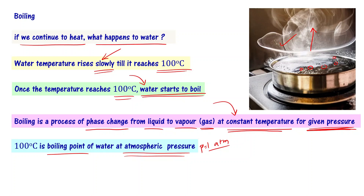A pressure cooker will boil at a slightly higher temperature — 110 or 120 degrees — depending on the pressure cooker's weight valve. The internal pressure of the pressure cooker is going to increase, and for that reason the boiling point is going to increase. For atmospheric pressure, the boiling point of water is 100 degrees centigrade.